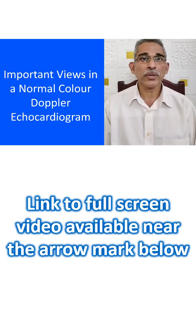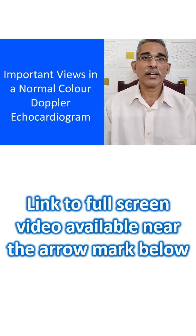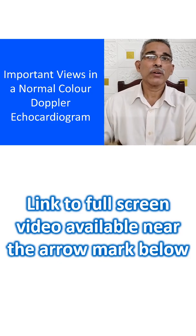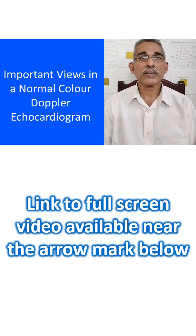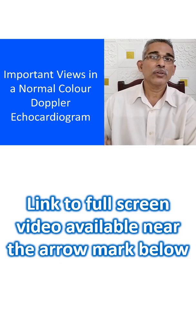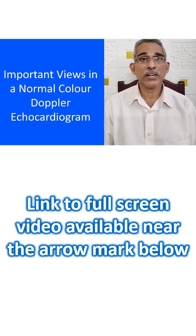Rarely, other views can also be used — for example, the right parasternal view to see the right atrium or a dilated right ventricle. A view can also be taken from the liver region, especially in post-operative patients where the central part is covered by dressing. There is also a view from the infraaxillary region, which is very useful for evaluation of the inferior vena cava.